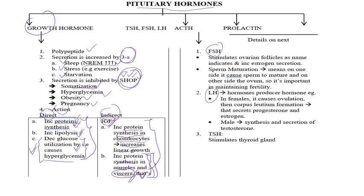FSH and LH are important for maintaining fertility. LH produces hormones — in females it causes ovulation, then corpus luteum formation, which secretes progesterone. In males it helps in testosterone synthesis, which we will study in detail later. Simply put, luteinizing hormone produces hormones: progesterone in females and testosterone in males. TSH, as its name indicates, causes stimulation of the thyroid gland.